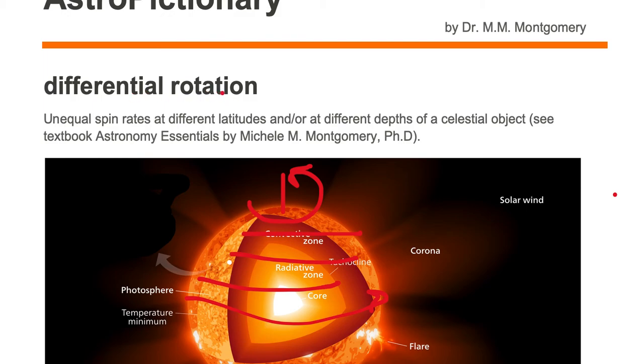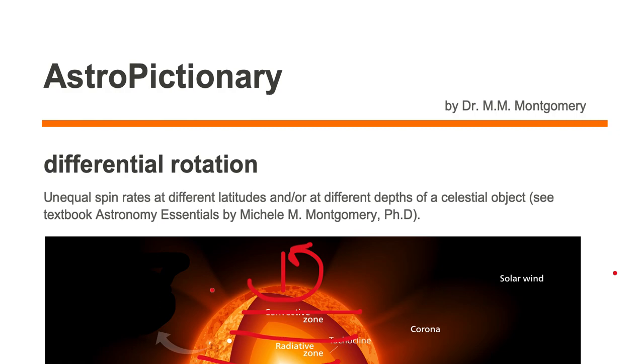So differential rotation has two parts. You could have either different interior layers rotating at different speeds, or you could have one layer with different latitudes moving at different speeds. In the case of the sun, it has both and therefore differentially rotates.